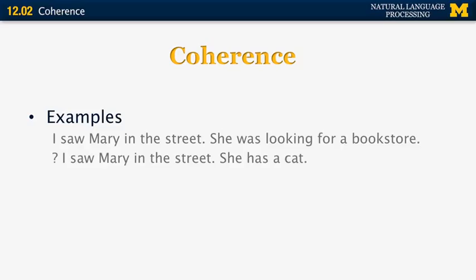The second example becomes a little bit problematic: 'I saw Mary in the street. She has a cat.' While both of those sentences are perhaps true, it is a little awkward to use them in the same paragraph because there's really no logical connection between the two — unless there's more in the discourse connecting the cat to why Mary was in the street. But overall, this looks a little awkward.